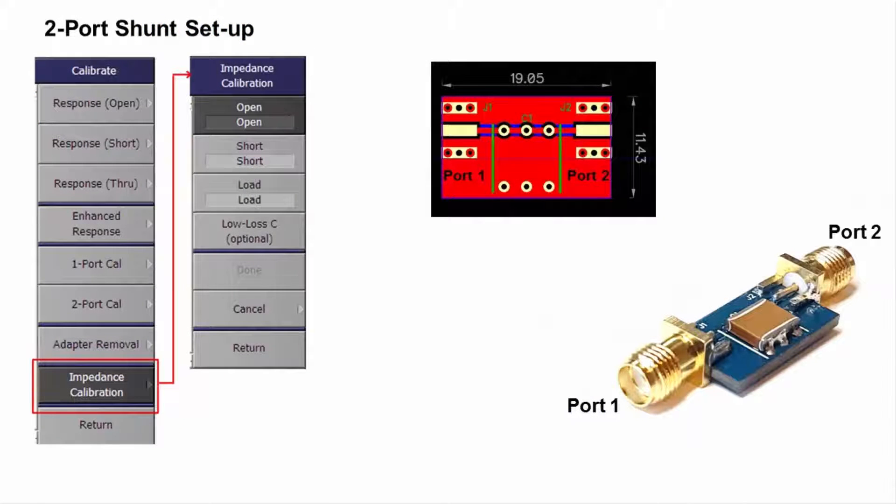There are four steps in the process, beginning with calibrating the two instrument ports. This generally includes a through calibration between the two ports for measurements below 50 MHz.